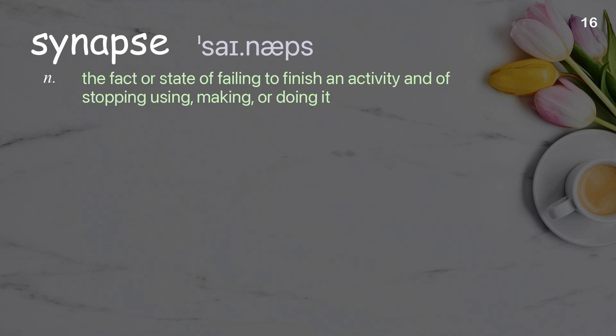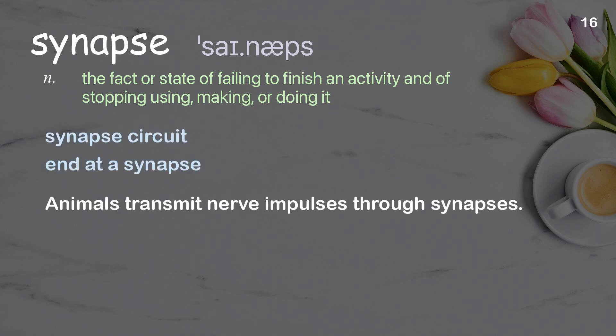Synapse: Examples: Synapse circuit. And at a synapse. Animals transmit nerve impulses through synapses.